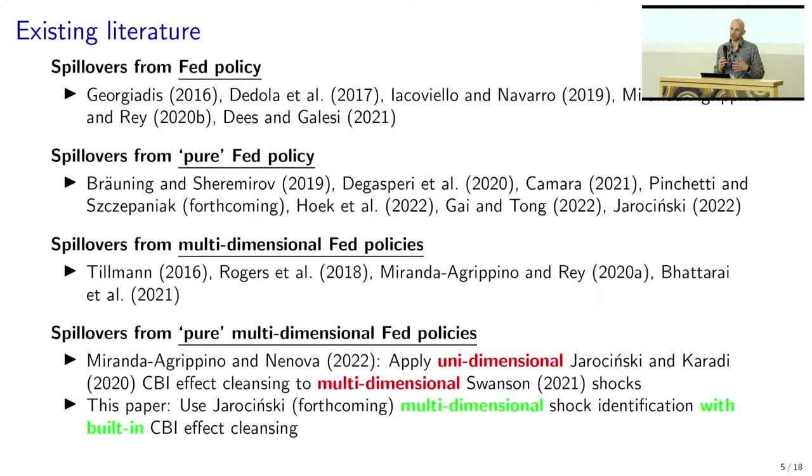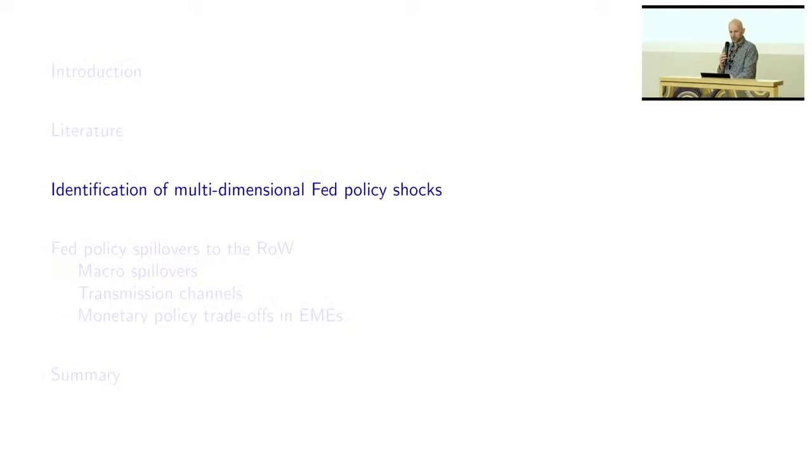To the best of our knowledge, there is just one paper that does this, and we argue in the paper that technically the way they try to tease out these central bank information effects may be problematic — in a nutshell, they use one auxiliary variable to tease out information effects from three dimensions of Fed monetary policy. So we make use of an identification approach that Marek proposed in a very recent paper. That's why it's also a very straightforward paper: we take this identification, plug it into the context of Fed spillovers, and see what we get.